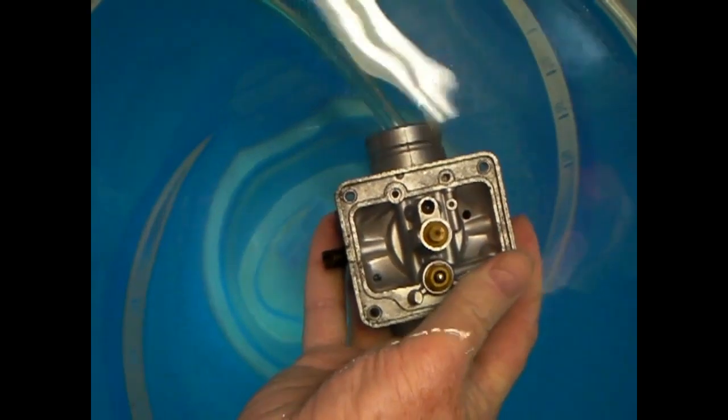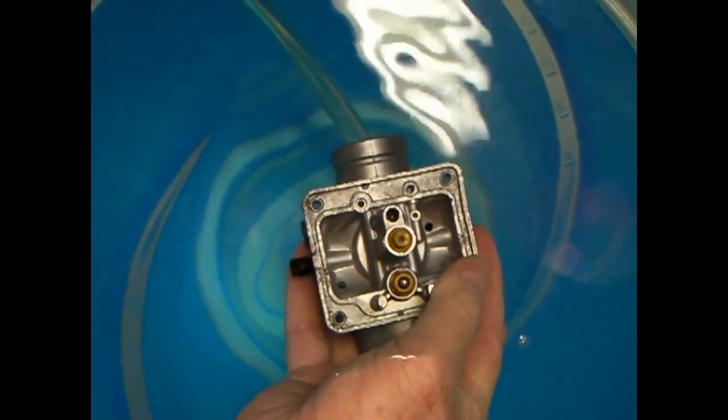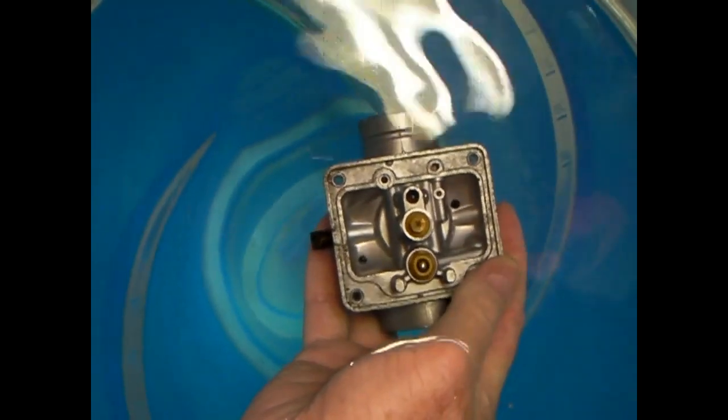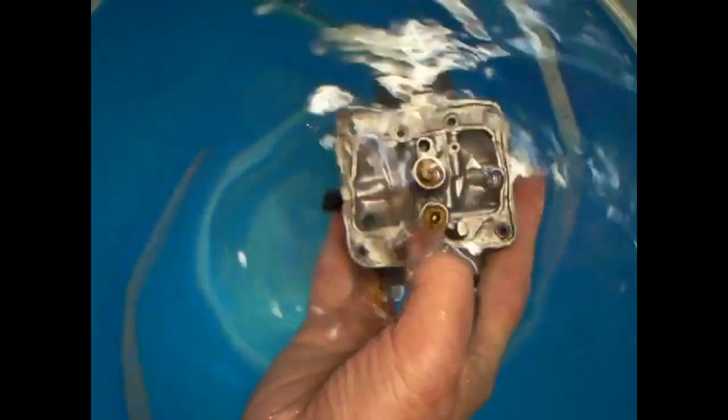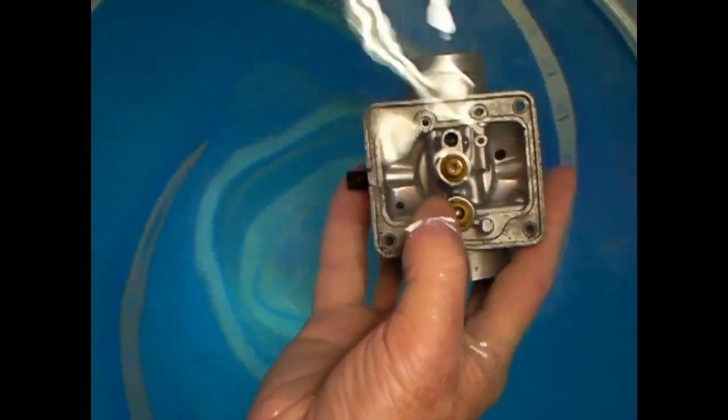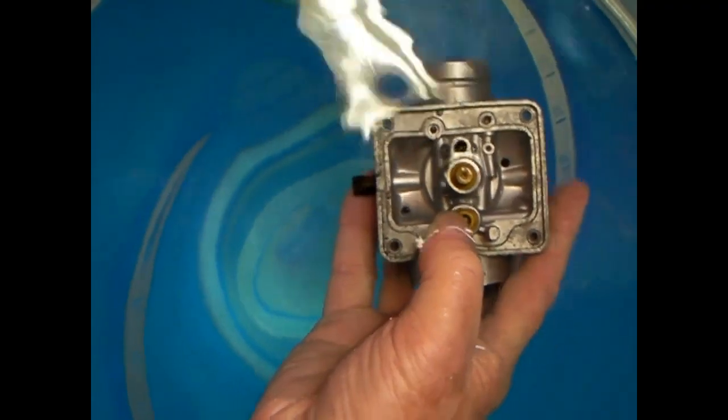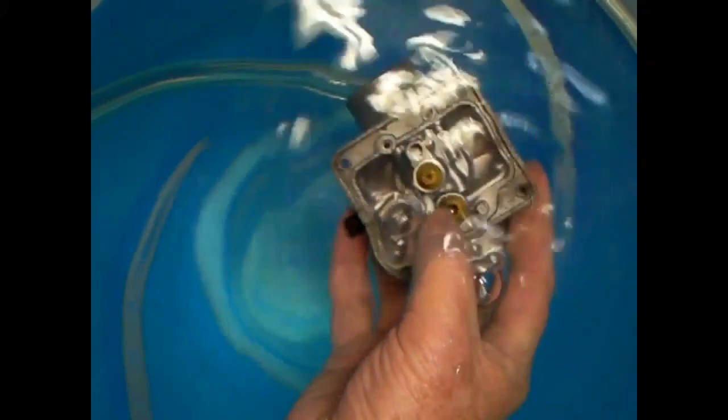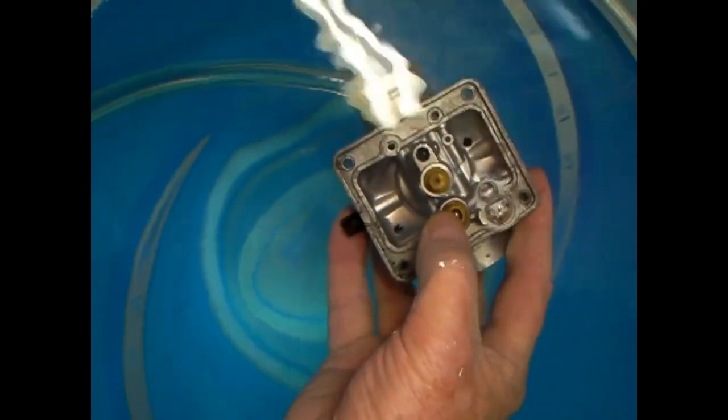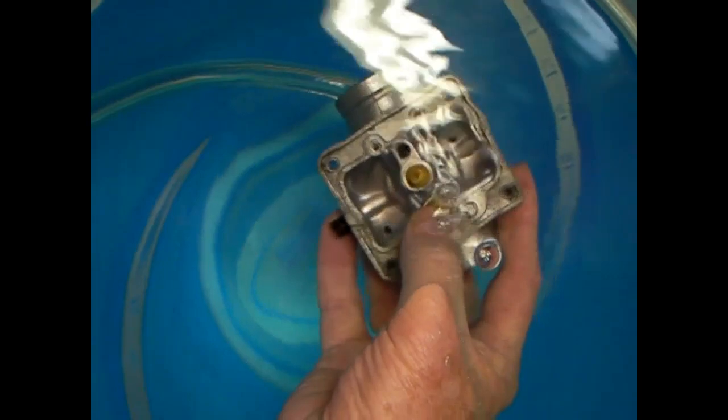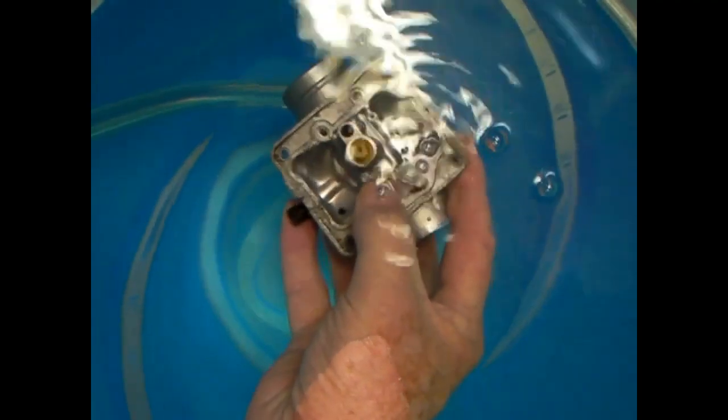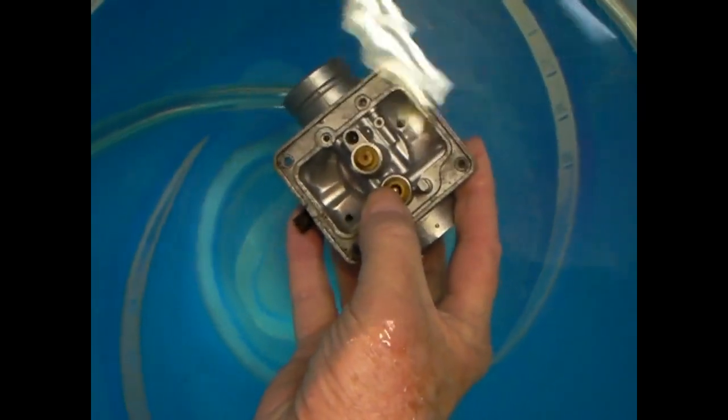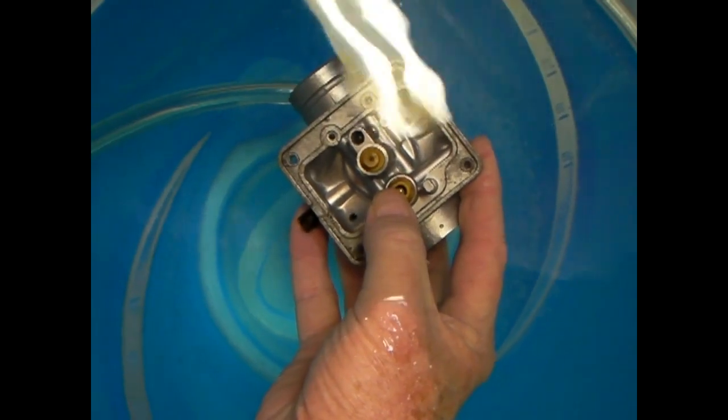I submerge this thing. This is the way I test them to make sure that the needle seals. When I blow in the end of the fuel line you'll see bubbles come up out of the needle. If I hold the needle down with my finger I hope you can see that there's air bubbles coming out past that needle.